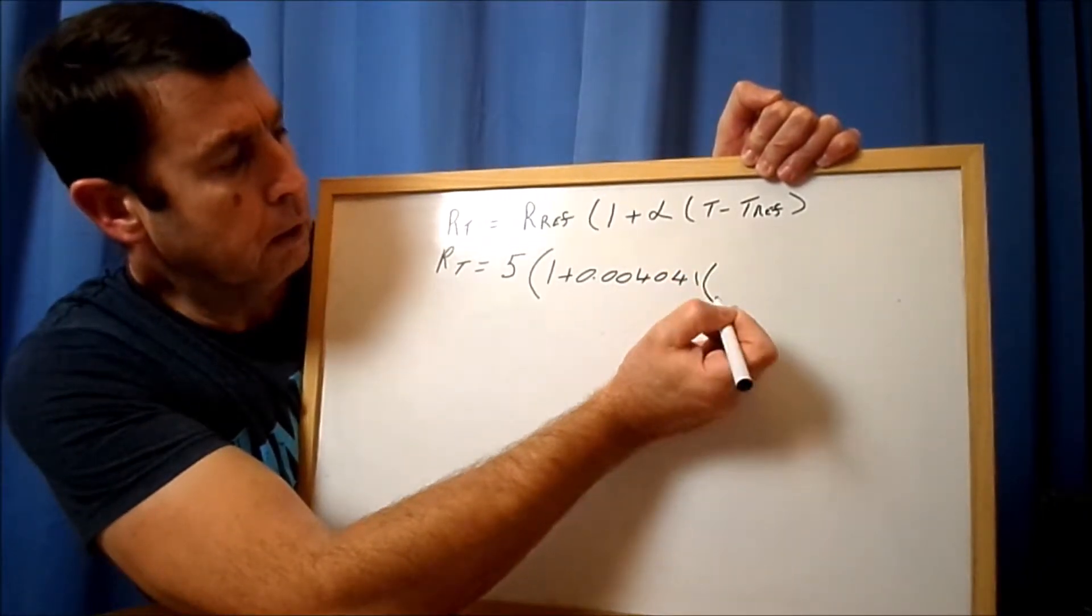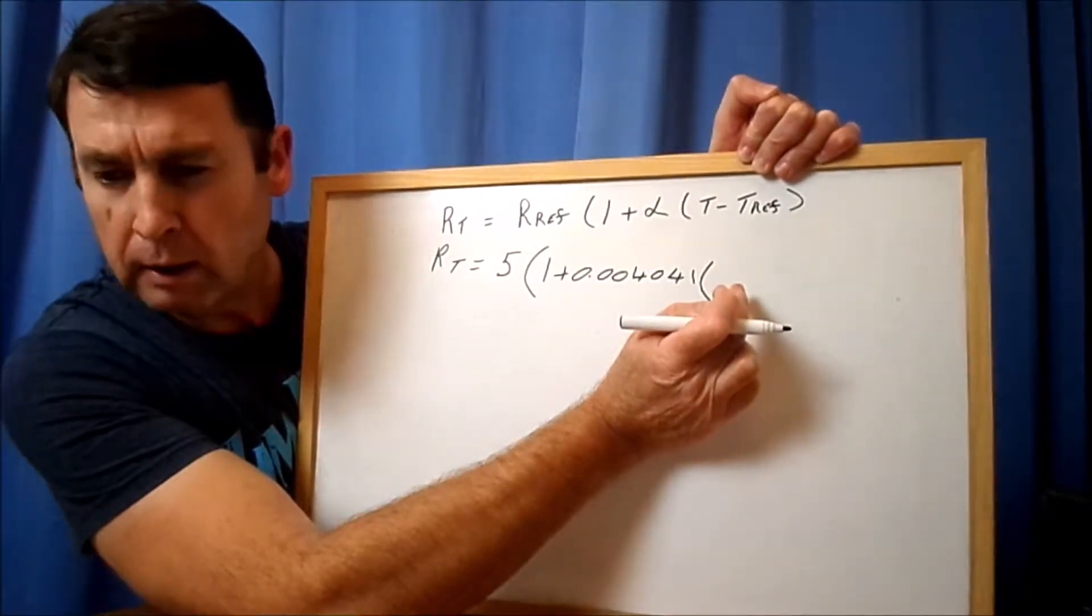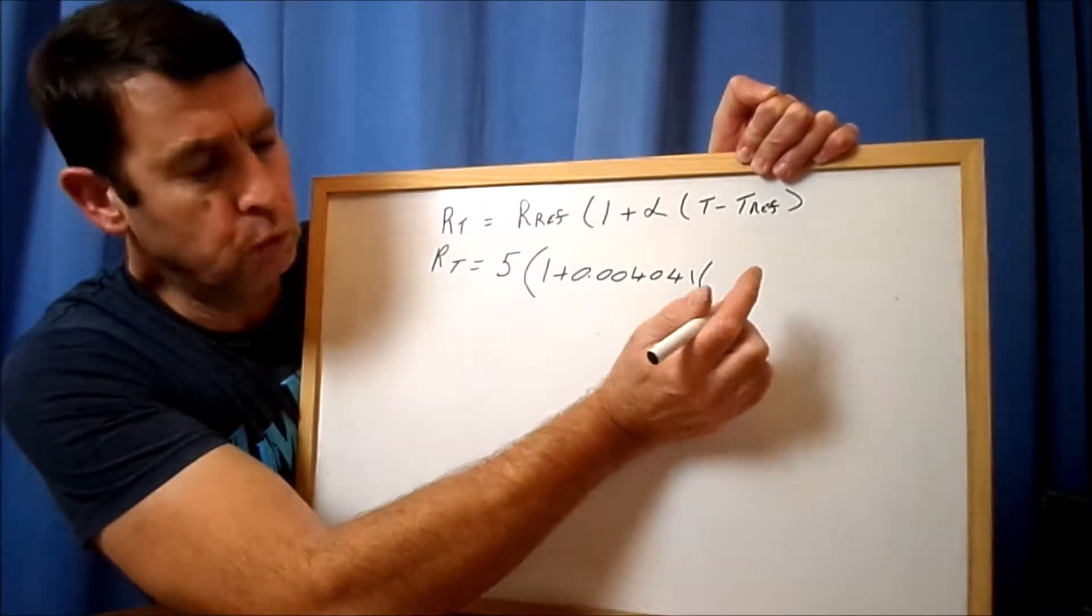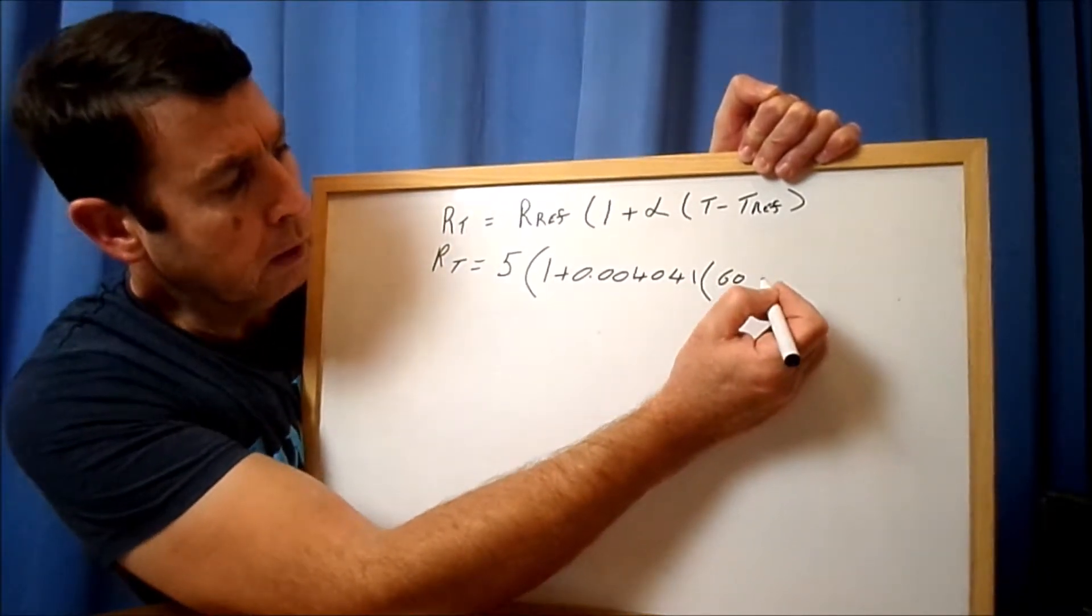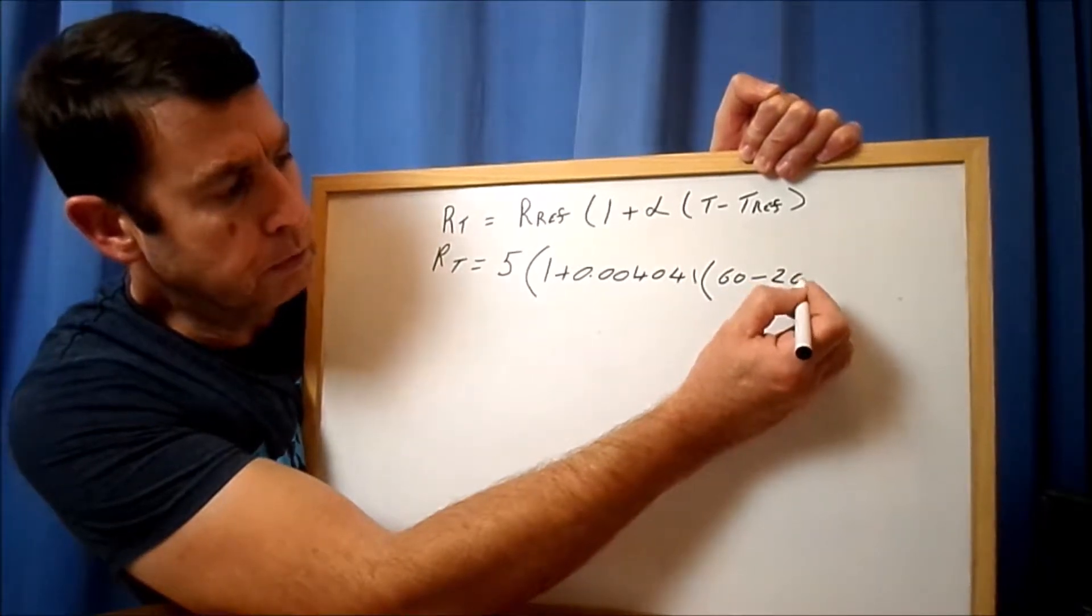One plus the alpha value, and we said that's 0.004041, at a temperature of - we said it was going to be 60 degrees.